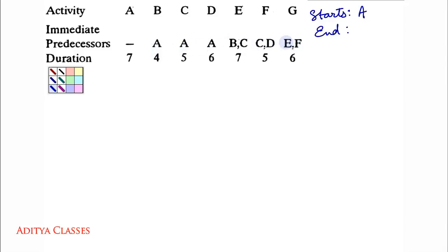So A, B, C, D, E and F. Everybody is here in this list except for G. So G will be ending this network.